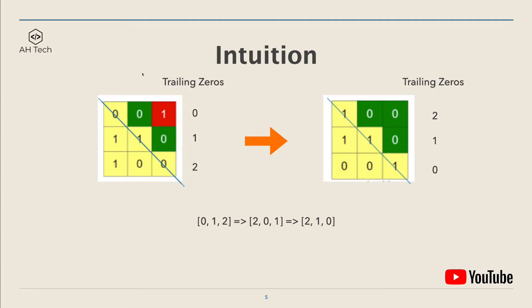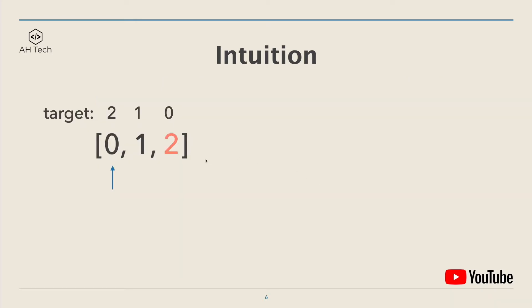Our goal is to transform this grid to look like this: two trailing zeros in the first row, and one, and then none in the third row. So the actual problem will become how do we transform this array [0, 1, 2] to the array [2, 1, 0].